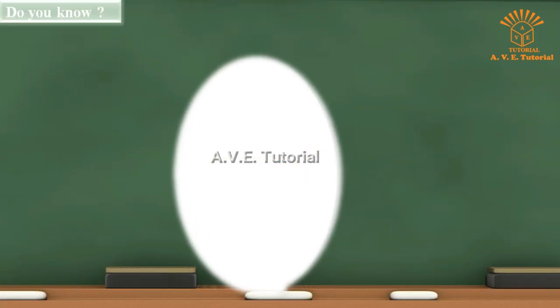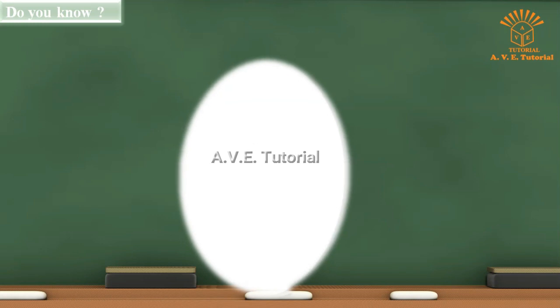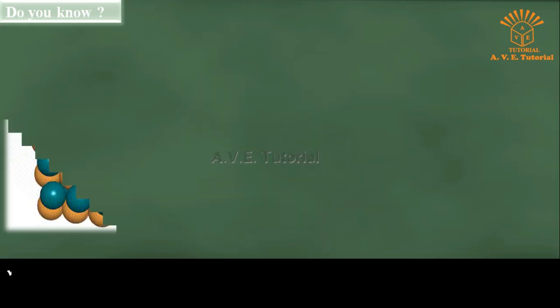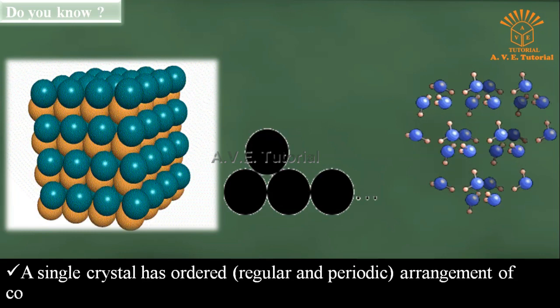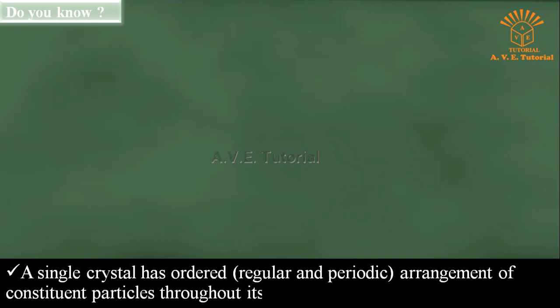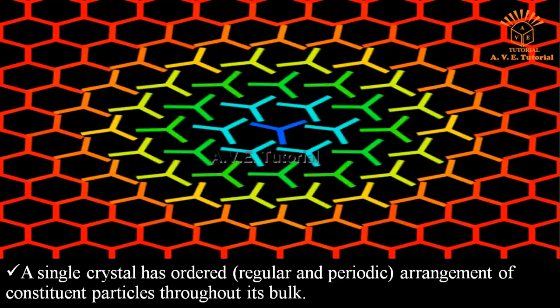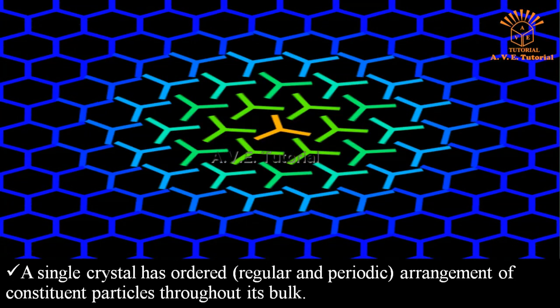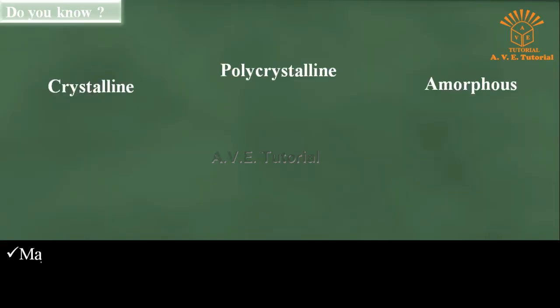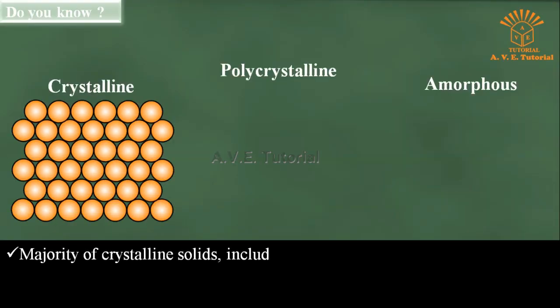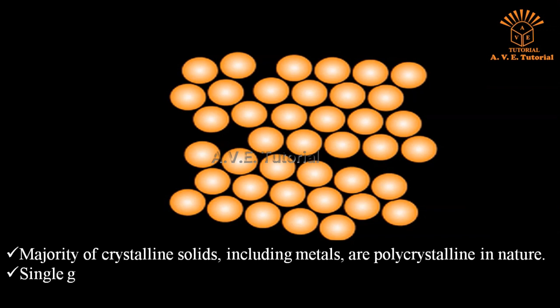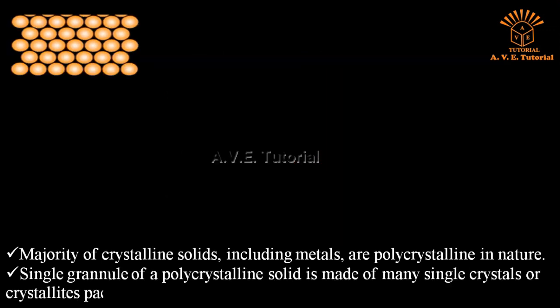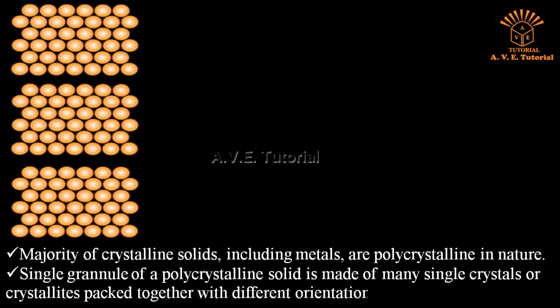Do you know? A single crystal has ordered, that is regular and periodic, arrangement of constituent particles throughout its bulk. Majority of crystalline solids, including metals, are polycrystalline in nature. Single granule of a polycrystalline solid is made of many single crystals or crystallites packed together with different orientations.